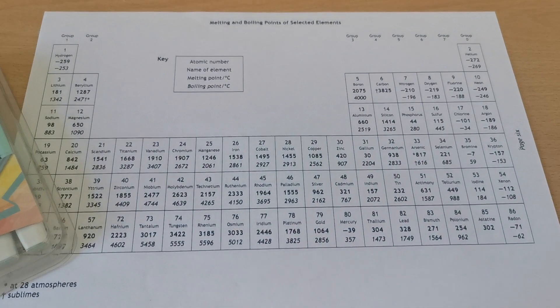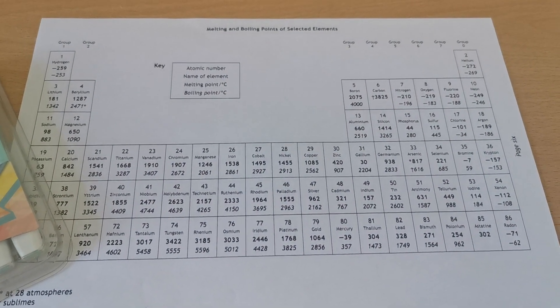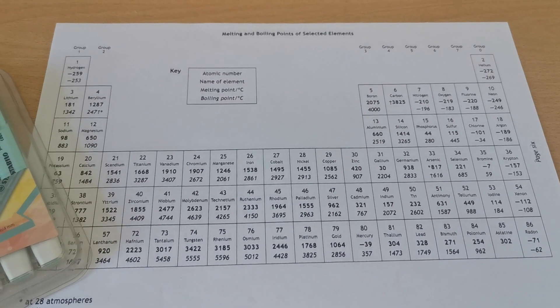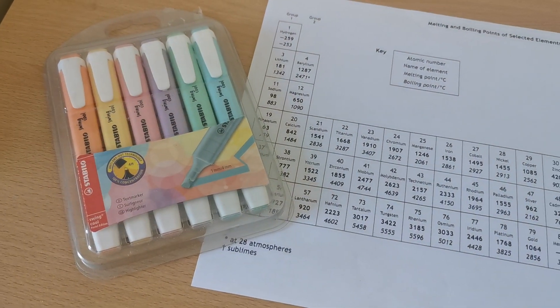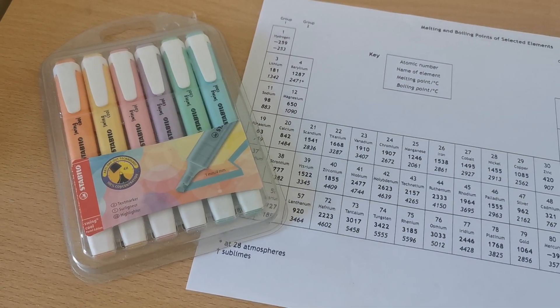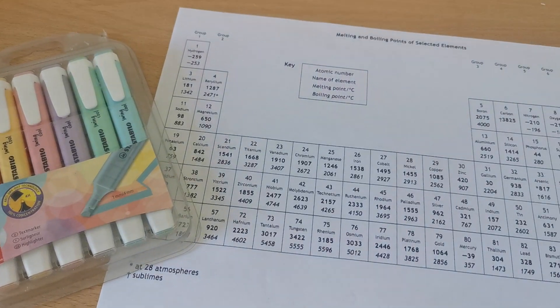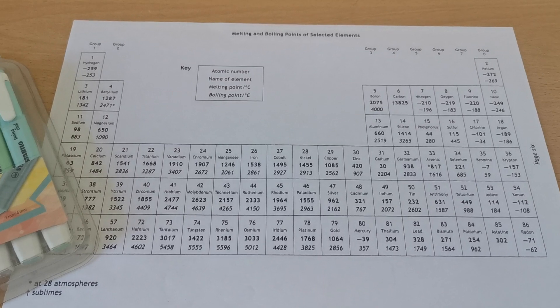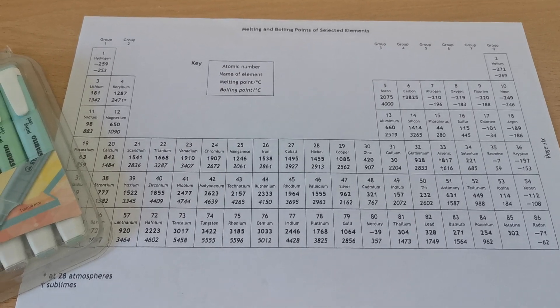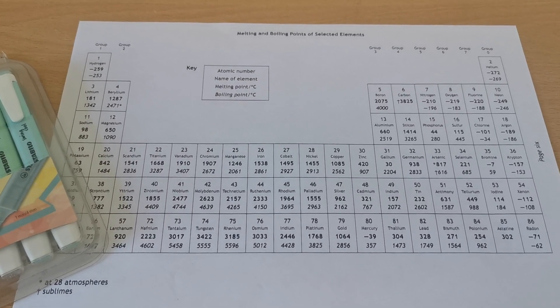This is from the advanced higher chemistry data booklet, page six, or just any periodic table really will be fine. And then some highlighters. You'll need four different colours minimum. And if you can't print off a copy of the periodic table, then I would just try and sketch one out as best as you can.